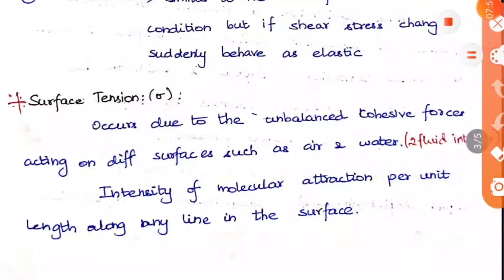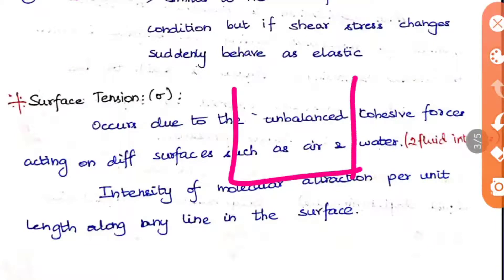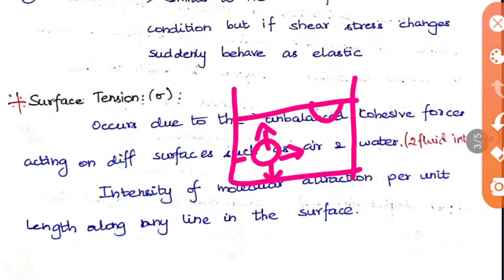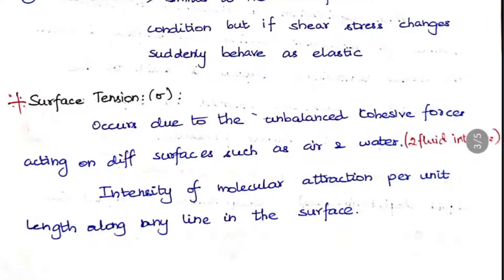The next property is surface tension. Surface tension occurs due to unbalanced cohesive forces acting at interfaces such as air and water (a two-fluid interface). A molecule deep inside a liquid is balanced, as forces act in all directions. However, a molecule on the surface is not balanced — force acts downward but not upward, causing surface tension. Surface tension is denoted by sigma and defined as intensity of molecular attraction per unit length along any line in the surface.